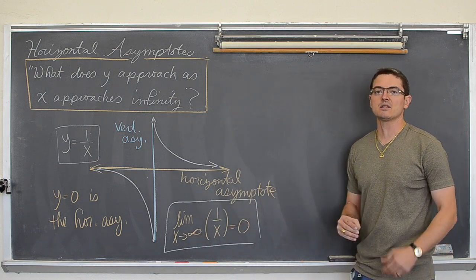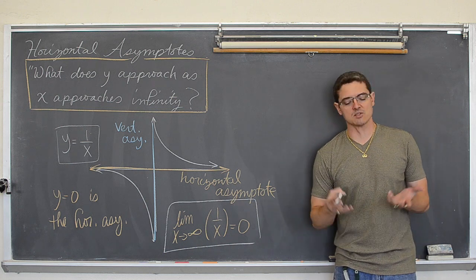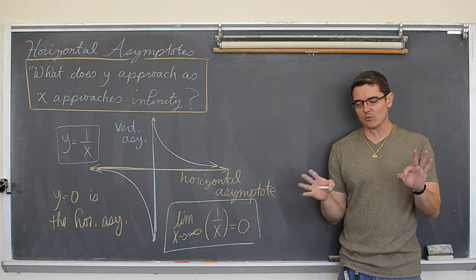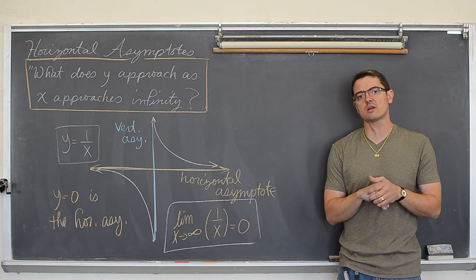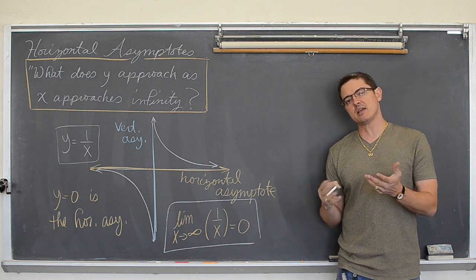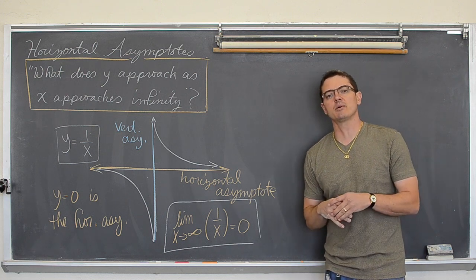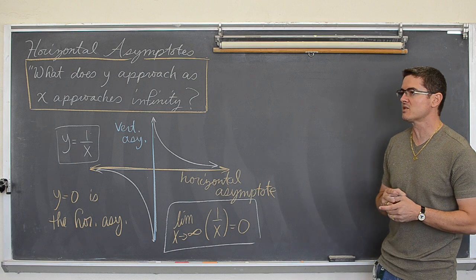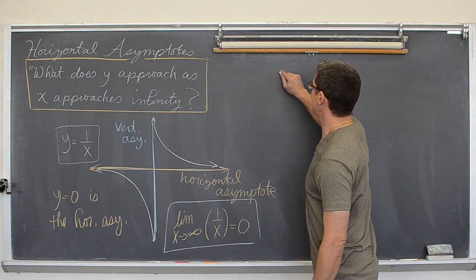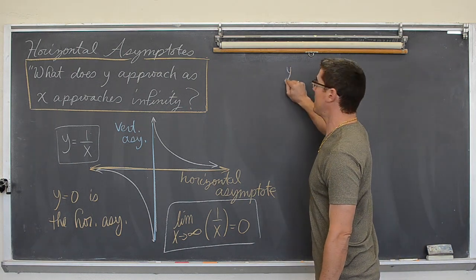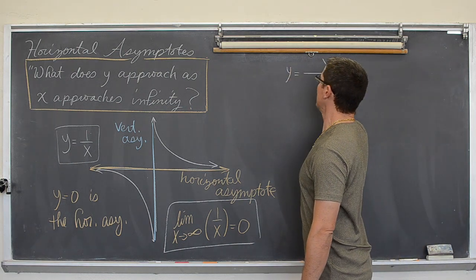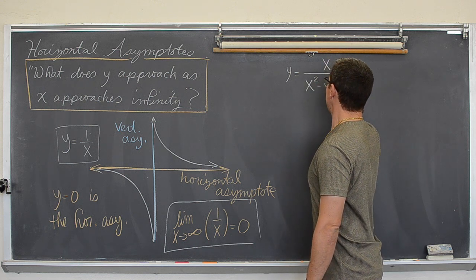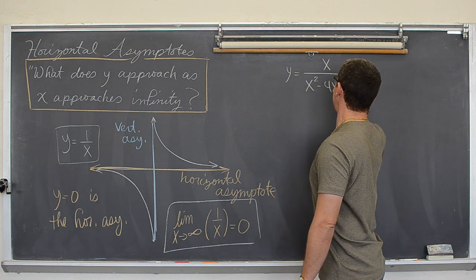Now I am going to recall this fact to help find some horizontal asymptotes. There are just three basic rules for finding horizontal asymptotes. I will cover those in a second, but I am going to over-explain this a little so you can see how it is really working. We are going to take the equation y equals x over x squared minus 4x minus 5.